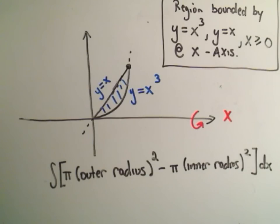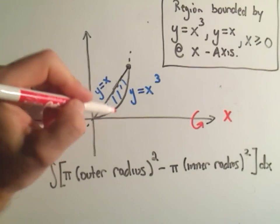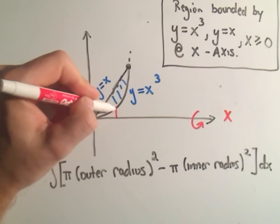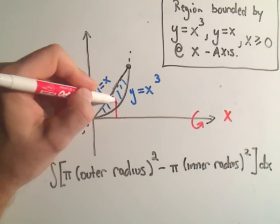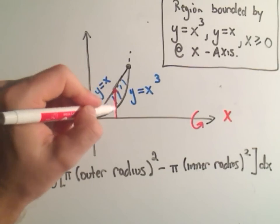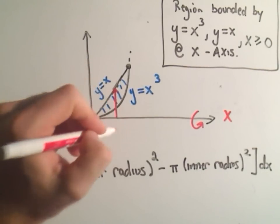And the way I think about the outer radius, the way I think about that is whatever line I'm rotating about, I draw a line perpendicular to that. It's going to go through my region, and then just right before it's about to exit the region, that's what I call the outer radius.